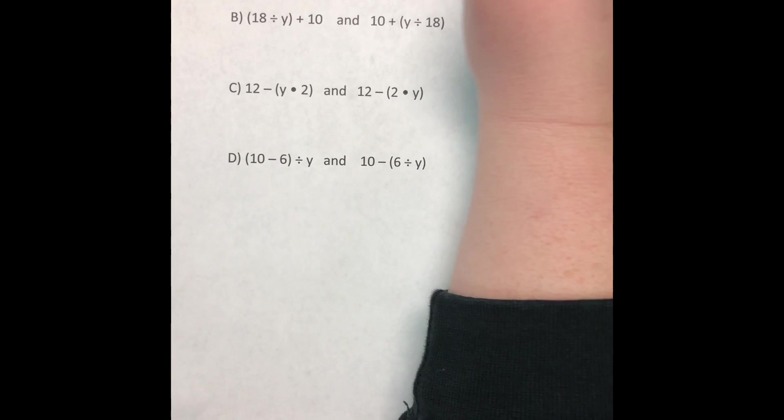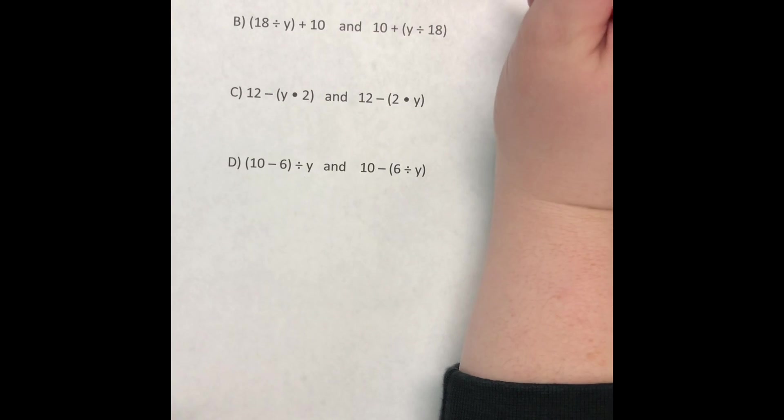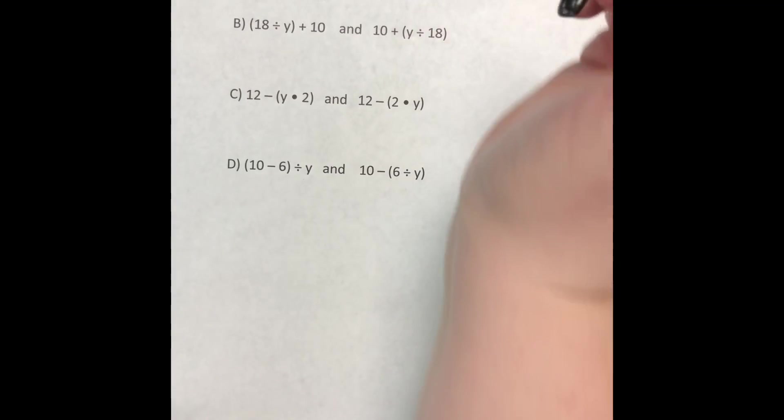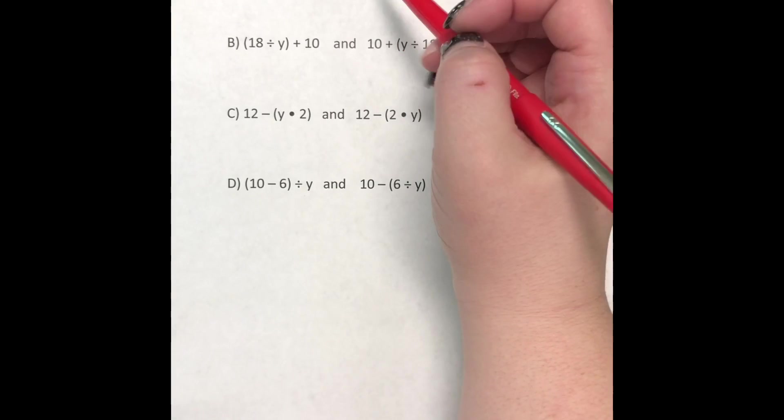So anytime we have a variable like x, y, or whatever letter, you can always plug in two when it says expressions are equivalent. So that's what we're going to do to check and see. One of the things I do want to talk about is some operations are reversible.